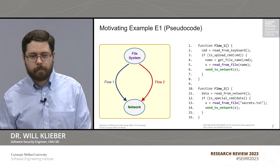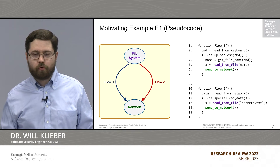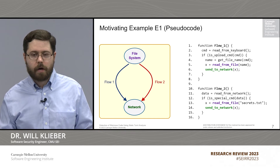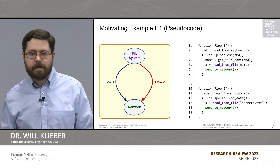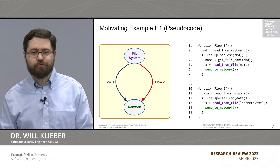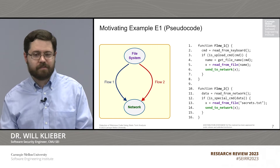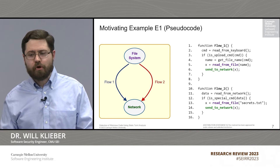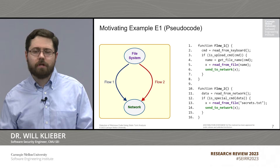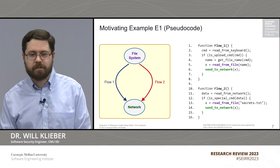Now let's look at flow two. In flow two, on line 11, we first read data from the network. We then call this function is_special_command, and if that function returns true, we read the contents of a file whose name is hardcoded — secrets.txt — and send that information to the network. So flow two looks obviously pretty suspicious. In reality you wouldn't have anything quite this obvious, but in general with a good level of analysis, it's usually pretty easy to determine whether code is malicious or not after you've spent the time analyzing it.